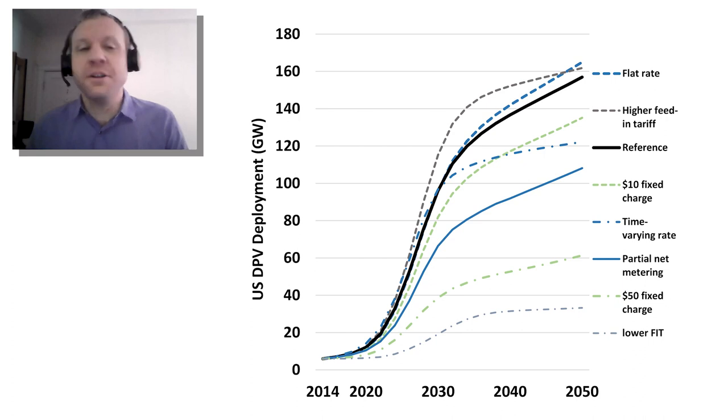We've had TOU rates for residential customers since the 70s — not in widespread adoption obviously — but the elements at play in this graph have been at play for a long time. The magnitudes of the effects and the time frame when we'll see bigger potential effects is looming. To put it in larger relief, we can move on to the next graph and look at the implications of these different rate designs.